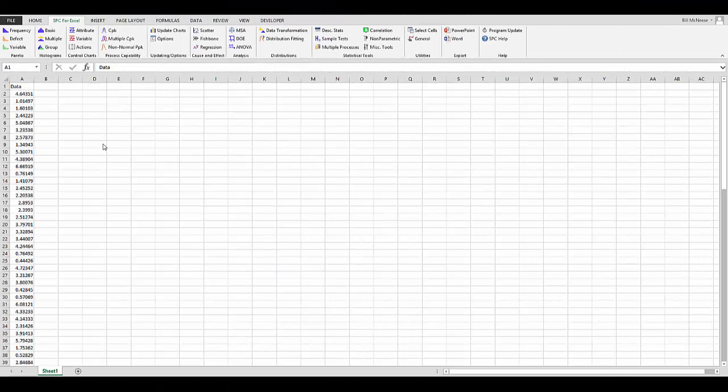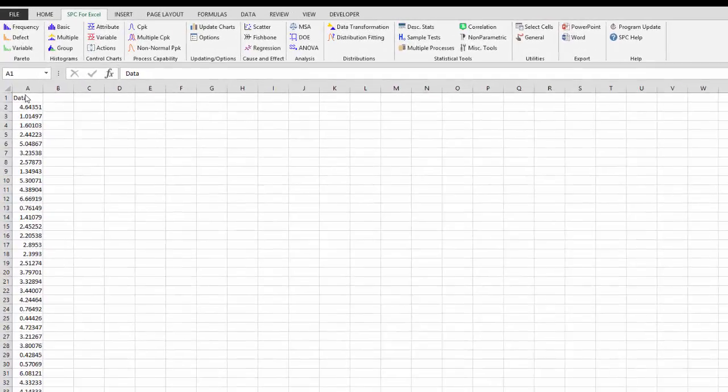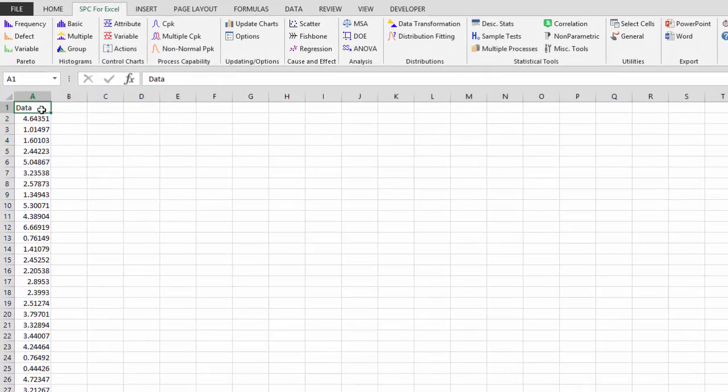To run the Box-Cox transformation using the SPC for Excel software, you begin by entering data into an Excel spreadsheet, as we've done here. We have 100 data points in the first column. It can be in multiple columns or rows, but just for this example, we have it in column A. So you select your data, and then you go to the SPC for Excel ribbon and select data transformation.